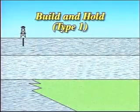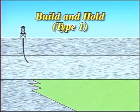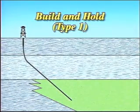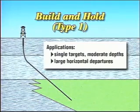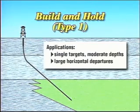The build and hold pattern employs a shallow initial deflection from vertical and a straight angle approach to the target. It's good mainly for reaching single targets at moderate depths, and sometimes for drilling deeper wells with large horizontal departures.